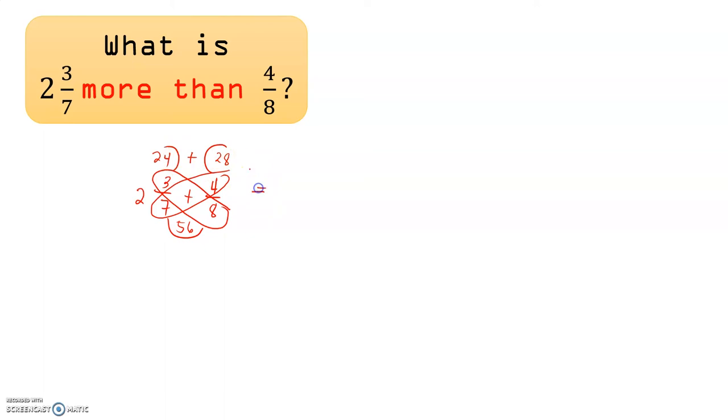Now let's add this antenna. So 24 plus 28 is equal to 52. Then 56 will be copied. But let us not forget that we have here a whole number, so we'll copy that one here.